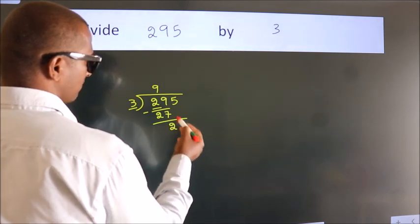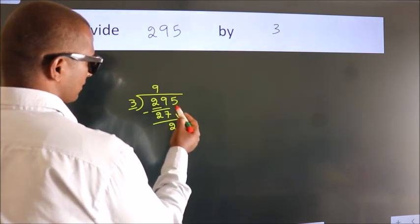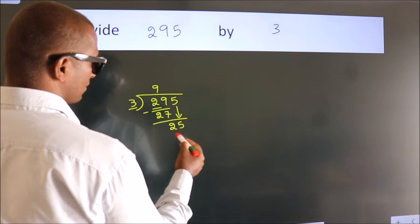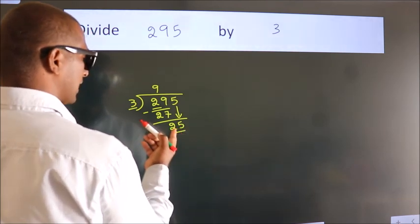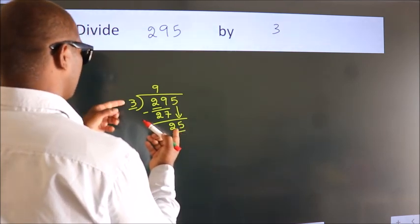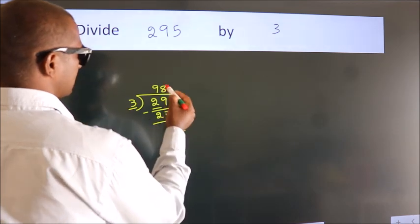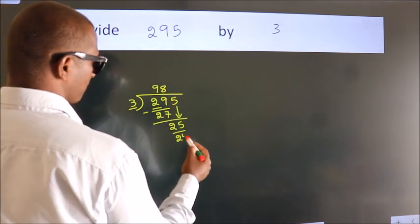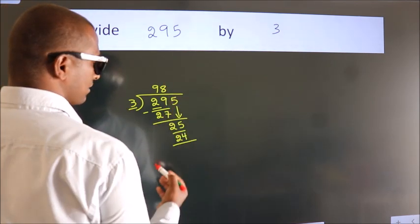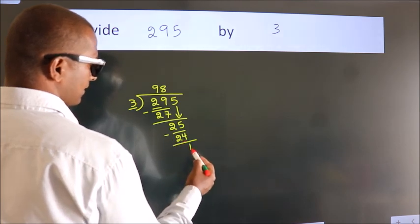After this, bring down the beside number, so 5 down. So, 25. A number close to 25 in the 3 table is 3 times 8, 24. Now we subtract. We get 1.